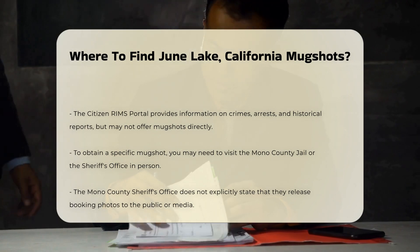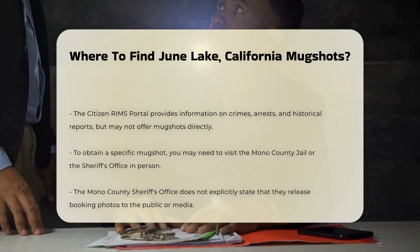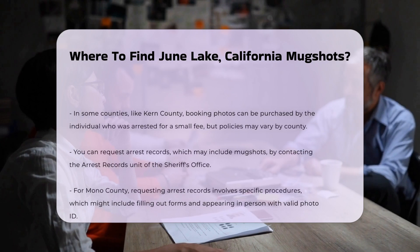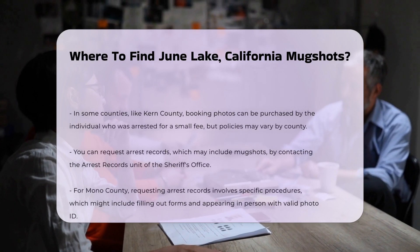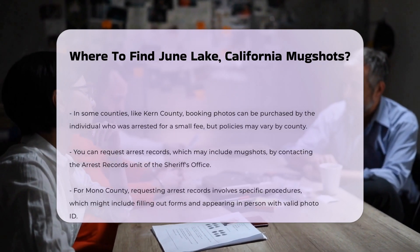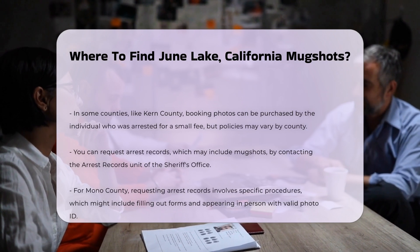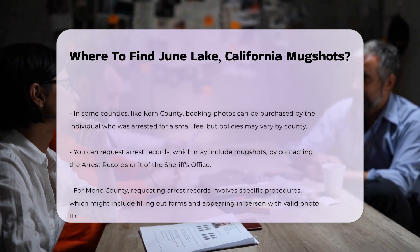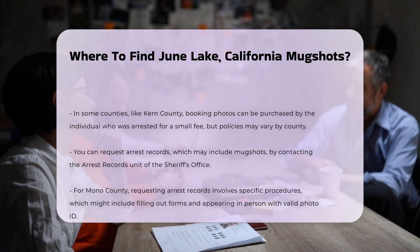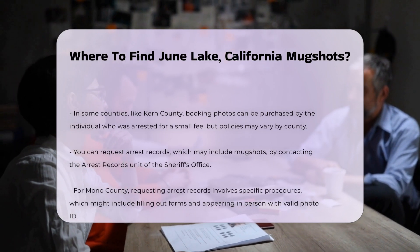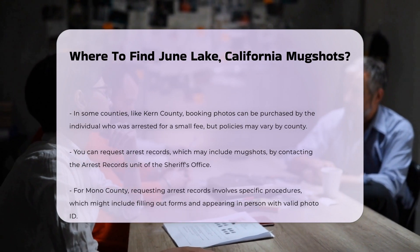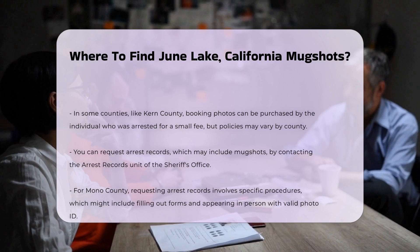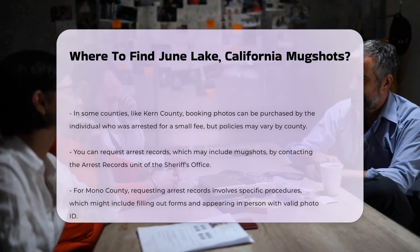If you need a specific mugshot, you may need to visit the Mono County Jail or the Sheriff's Office in person. However, the Mono County Sheriff's Office does not explicitly state that they release booking photos to the public or media. In some cases, like in Kern County, booking photos can be purchased by the individual who was arrested for a small fee, but this policy may vary.